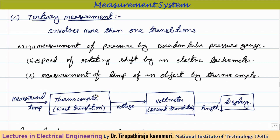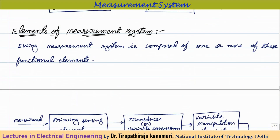Another tertiary measurement example is temperature measurement using a thermocouple. The thermocouple converts temperature into a voltage — the first conversion. That voltage is then given to a voltmeter, which converts the voltage into pointer displacement (length) on a scale — the second conversion. Speed measurement by tachometer follows the same pattern: rotary motion → voltage → dial movement, making it tertiary.